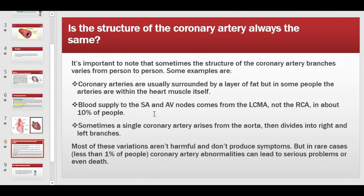Another variation is that in about 10% of people, the blood supply to the SA node and AV node comes from the left coronary artery rather than the right coronary artery. Normally the RCA is the sole supply to these nodes, but in this variant the left coronary artery supplies them instead. This is also not problematic unless it interferes with blood supply.